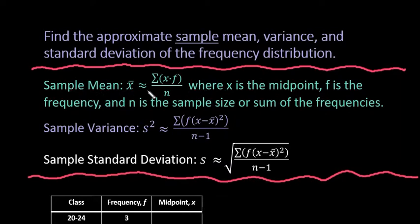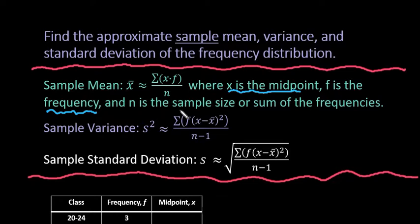For the sample mean, your calculator takes each x value — where x is the midpoint — times the frequency f, finds all the products, adds them up, and divides by the sample size. For the sample variance, you take each individual midpoint, subtract the mean, square those deviations, multiply each squared deviation by the frequency, sum that column, and divide by n minus 1. For the sample standard deviation you just take the square root.